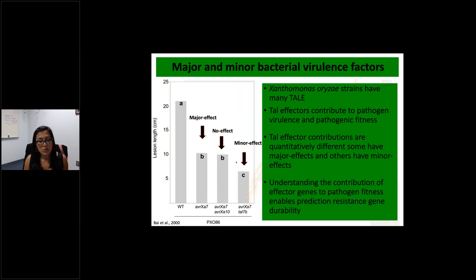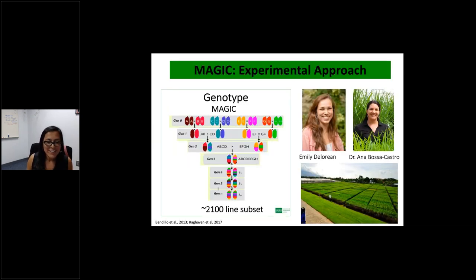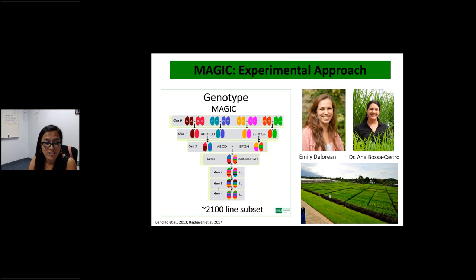We wanted to take advantage of this to understand the contribution of these minor effect TAL effectors to pathogen fitness and to help predict durable disease resistance. The goal is to identify novel sources of resistance that target a minor effect TAL effector — in this case TAL7b. To do that, we used MAGIC. A MAGIC population is generated from eight elite varieties of rice. These eight parents are recombined, leading to higher recombination that improves mapping resolution and allows us to identify novel traits or genes of interest.